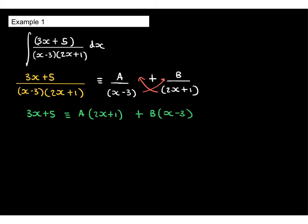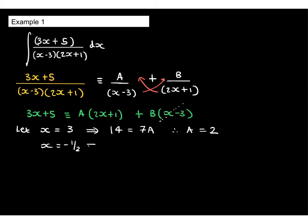I can use this identity to find the values of A and B by choosing values of x carefully, which will result in the brackets becoming 0. Choosing x equals 3: the left-hand side gives 14, and on the right-hand side this term becomes 0, leaving 7A. So A equals 2. Choosing x equals negative one half: the left-hand side becomes 7 over 2, this term becomes 0, and the other part becomes negative 7 over 2 times B. So B equals negative 1.